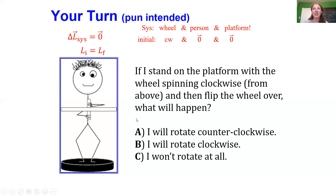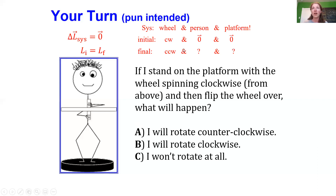Looking at the initial angular momentum of the system — just its direction — the wheel starts off counterclockwise, the person has zero angular momentum, and the platform has zero angular momentum. But once we flip the wheel over in our final state, the wheel now has clockwise angular momentum because flipping it changes the direction of its angular momentum vector. So the question is: what will the person and the platform have to do to compensate?